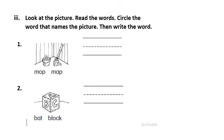Number three. Look at the picture. Read the words. Circle the word that names the picture, then write the word. Now here I have mop, map. This is short A, this is short O. Mop, map. The picture shows a mop and not a map. So I write here mop, and I should circle it first.